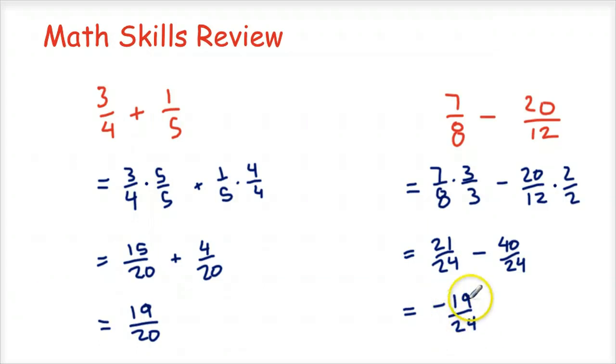So twenty-one minus forty is going to be negative nineteen twenty-fourths. And is there any simplifying there? I just have a negative nineteen twenty-fourths. There's no common factors to pull out. So that's my final answer there.